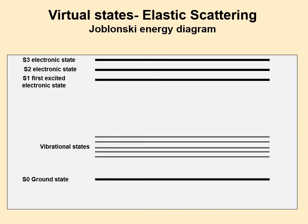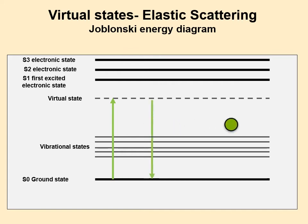So when we say Raman scattering, this is the Stokes version. Let's go to our energy diagram. We already have the vibrational states; now we add virtual states. A virtual state is not a real state — it's mostly here for conceptual purposes. With Rayleigh scattering, a photon comes in — too much energy to excite a vibrational state, too low for an electronic state — so it just drops right back down to the ground state.